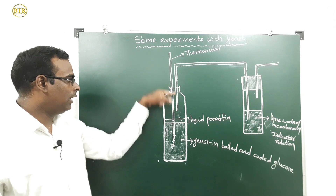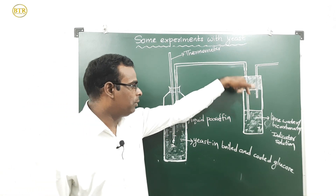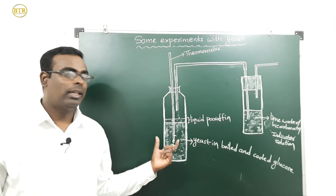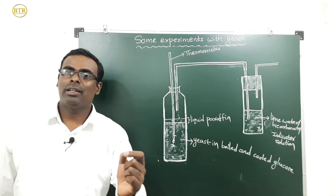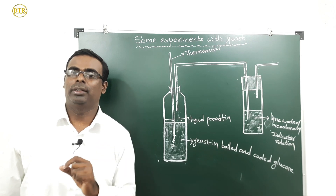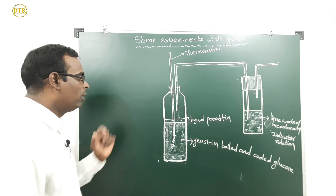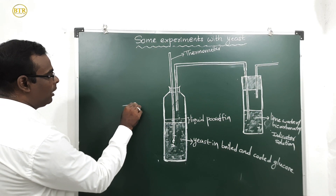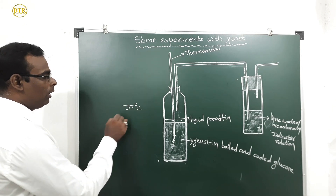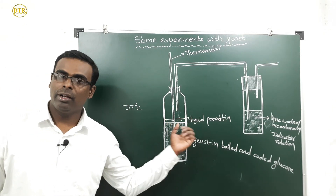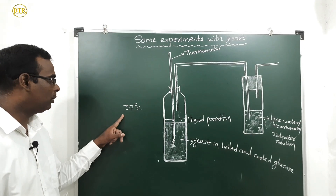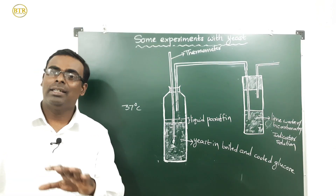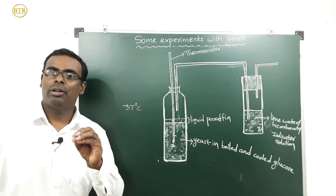One end of the U-shaped tube should be in the thermos flask and the other end in the lime water. Keep this apparatus undisturbed for one or two days. Also warm the apparatus up to 37 degrees Celsius to speed up the reaction.